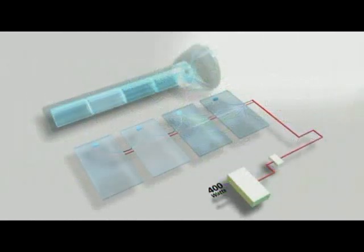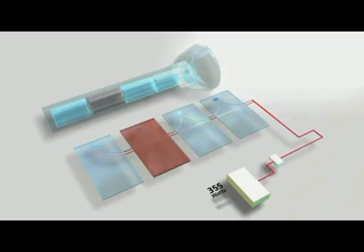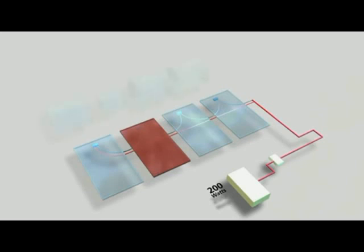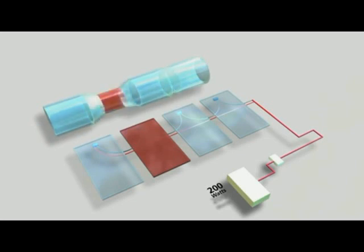Solar modules are connected in series. When all the modules are producing the same amount of power, the array is producing optimally. However, when one module underperforms, it not only outputs less — it also drags down the other modules in the string. You can think of solar modules as pipes: perfect modules have a larger pipe, underperforming modules have a smaller pipe. When connected together, the small pipe constricts the flow of energy through the array.